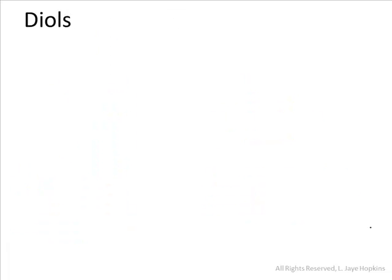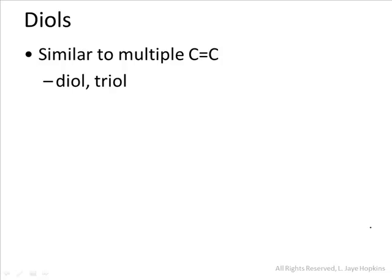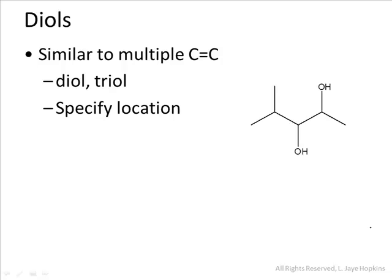Let's do an example of a diol — an alcohol that has more than one alcohol functional group. We'll name these similarly to how we handled carbon-carbon double bonds: one double bond made something an alkene with an '-ene' ending, and multiple bonds gave a diene or triene. Similarly with alcohols, it's possible to have a diol or a triol. You need to specify the location of each one using numbers separated by a comma, and again, there are two correct formats. Take a second to pause the video and name this molecule that has two OH functional groups.